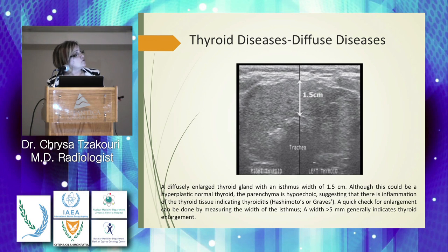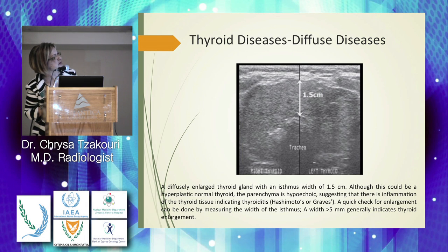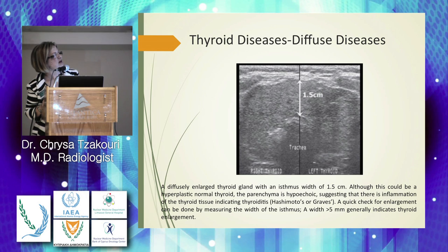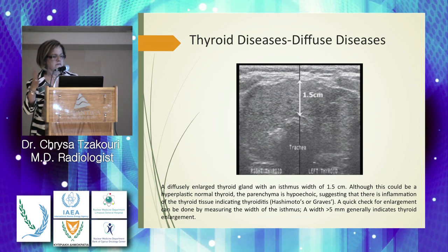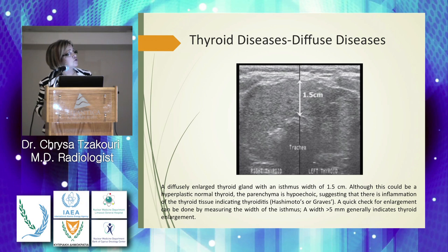In Hashimoto's or Graves' thyroiditis, diffuse thyroid enlargement is seen. A key diagnostic clue: on transverse imaging, if the isthmus measures more than 0.5 cm — and in severe cases up to 1.5 cm — combined with irregularity, this indicates thyroiditis even if not markedly hypoechoic or diffusely abnormal.